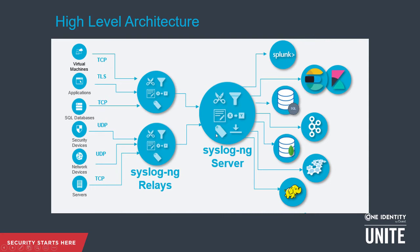The SyslogNG server also uses the notion of SyslogNG relays, which can be placed close to the hosts themselves. You can see here different transport protocols that the sources use to send their log data to the SyslogNG server. By putting the relays closer to the sources, we can convert, for example, UDP traffic to TCP, or even send via a proprietary log transfer protocol we have called ALTP, to guarantee log delivery to the SyslogNG server itself. The filtering and parsing that goes on — either on the relays, on the SyslogNG server, or even both — formats this data into the proper format to deliver downstream to its specific destination.